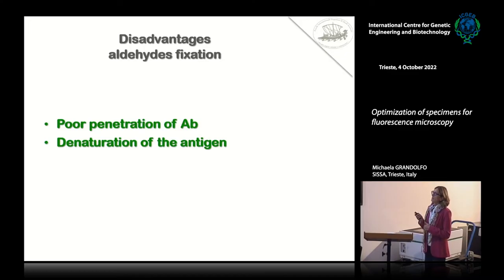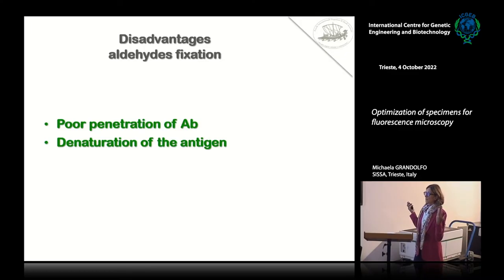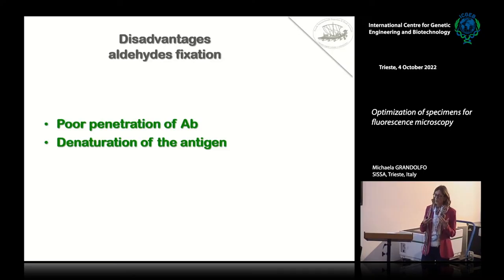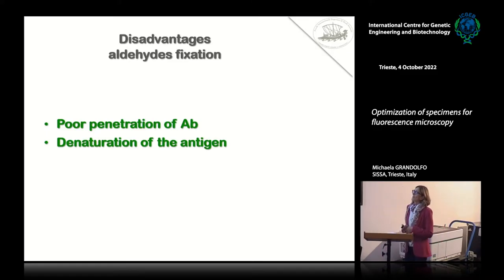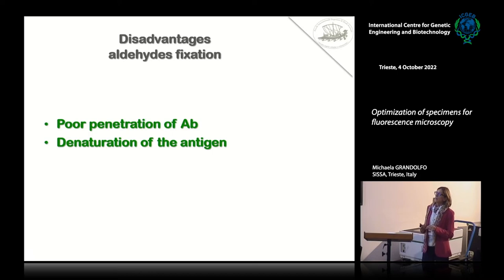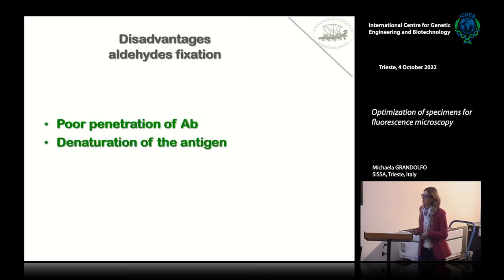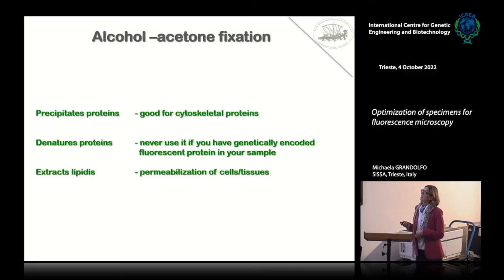The disadvantages of aldehyde fixation: very often you have poor penetration of antibody due to the cross-linking, so you have to think of an antigen unmasking step. You can also have denaturation of the antigen, also due to the formation of cross-linkings.